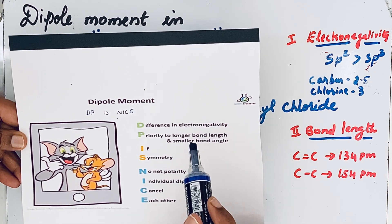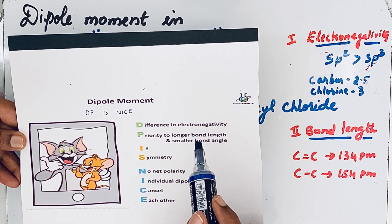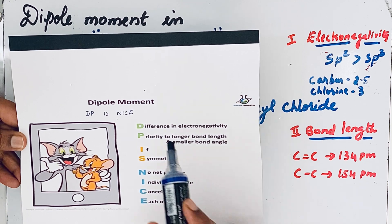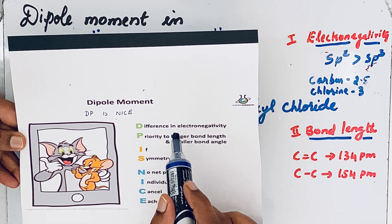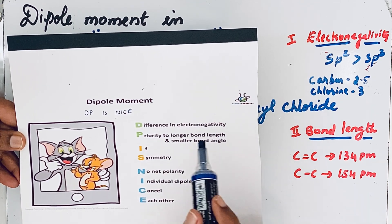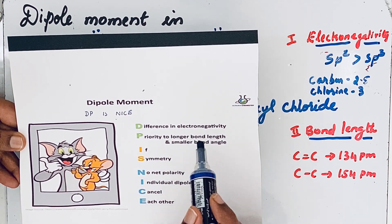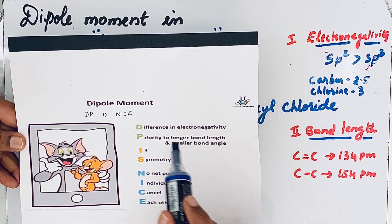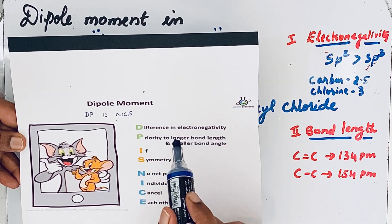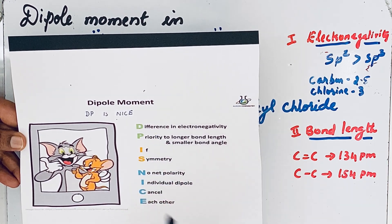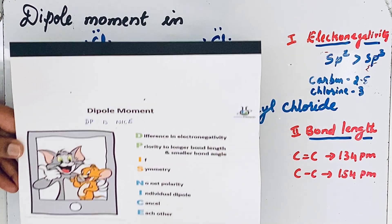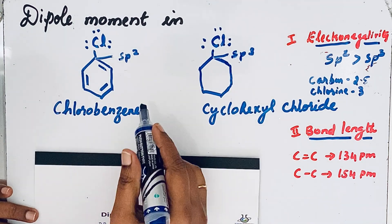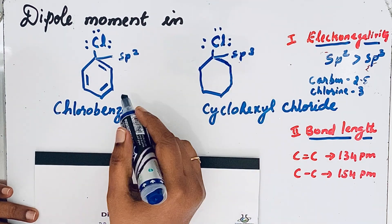The first two letters tell us about when dipole moment increases in a molecule. If the difference in electronegativity is greater and the bond length is longer, then that compound possesses a greater dipole moment. Let us now compare chlorobenzene and cyclohexyl chloride using these principles.